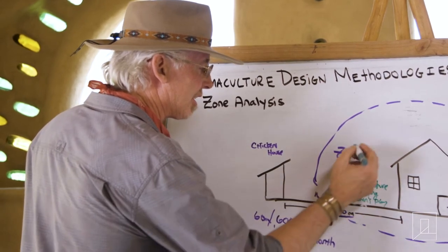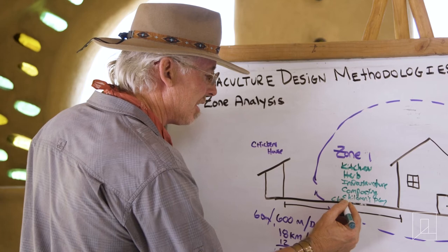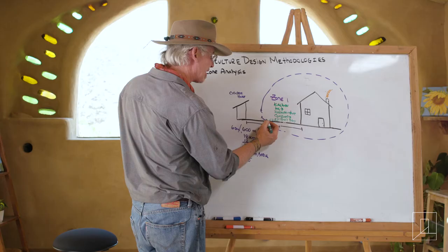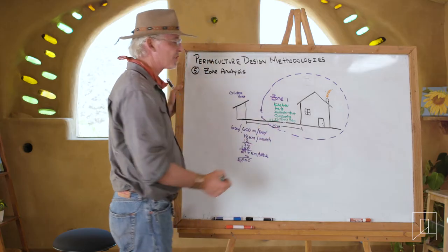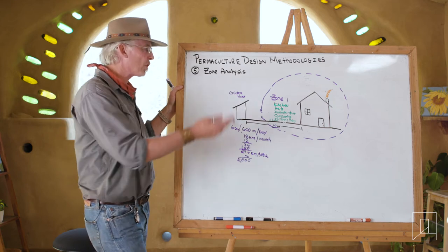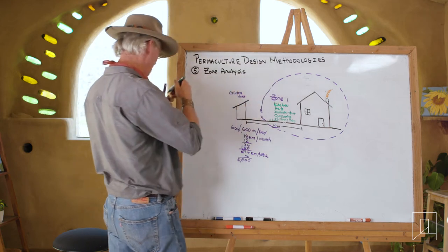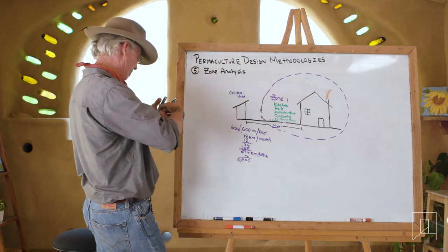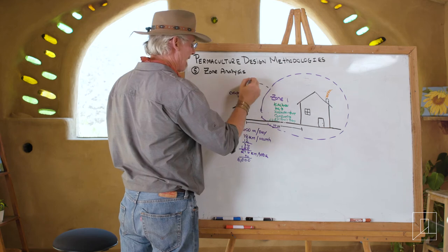That includes chicken systems. Usually what I would do is bring the chicken system right to the edge of your zone one, where it can then work with your zone two. Let me show you what zone two is and talk a little bit more about the different zones.